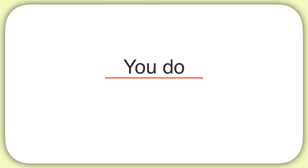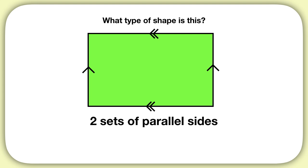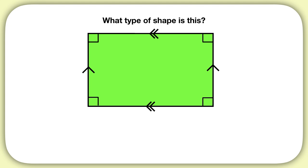Now it's time for you to practice on your own. What type of shape is this? This shape has two sets of parallel sides and four right angles. That means this is a rectangle.